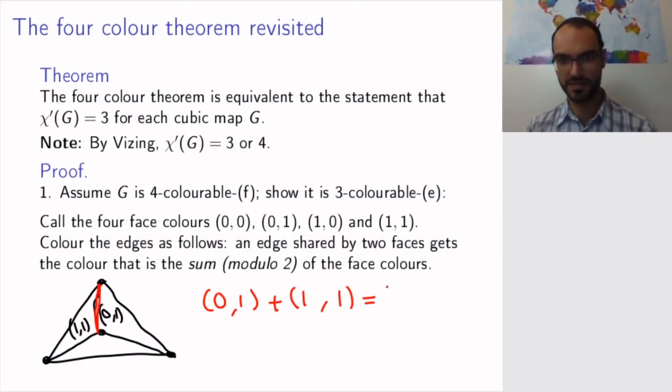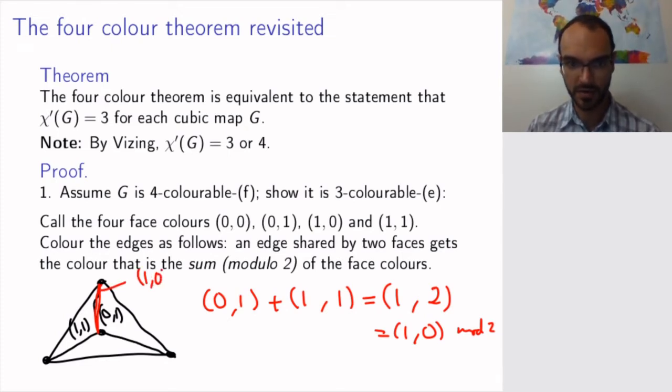So, I add the coordinates, 0 plus 1 is 1, and 1 plus 1 is 2, but 2 modulo 2 is equal to 0. So, this is the same as (1,0) mod 2. So, I end up giving this edge the color (1,0). And I keep doing that because each edge is going to lie between exactly two faces. So, I take the face colors, I add them modulo 2, and this will give me the edge color.